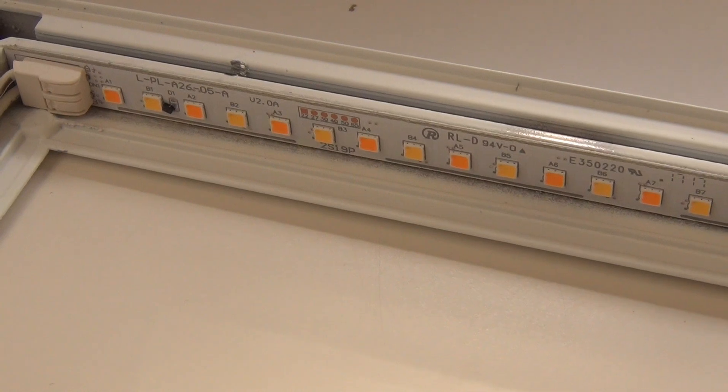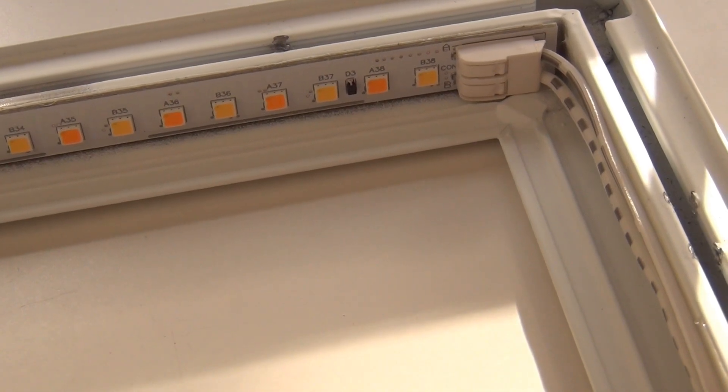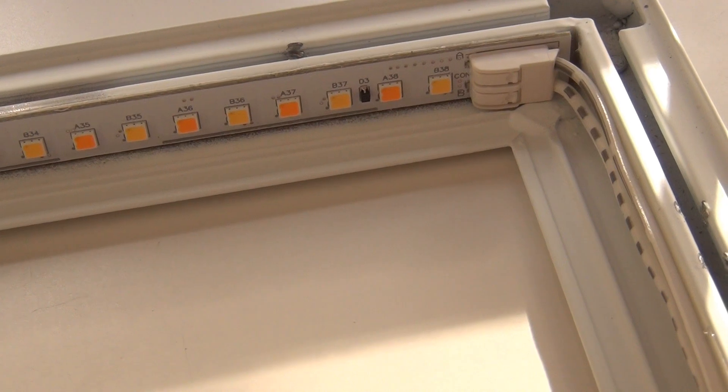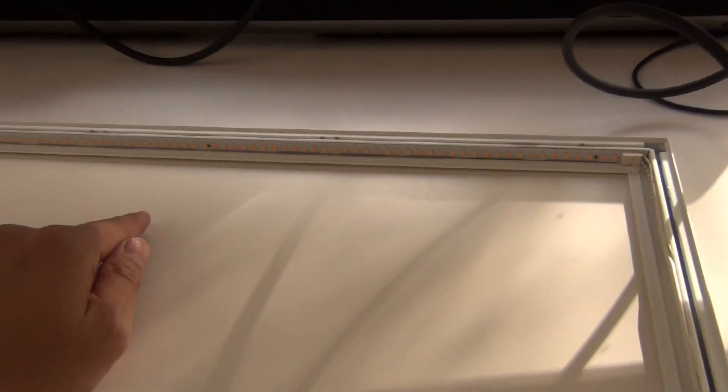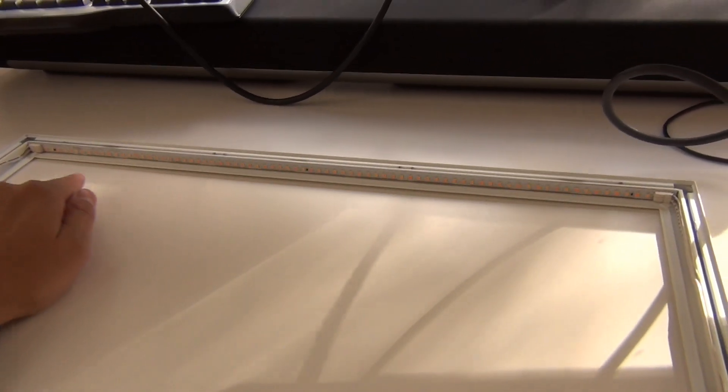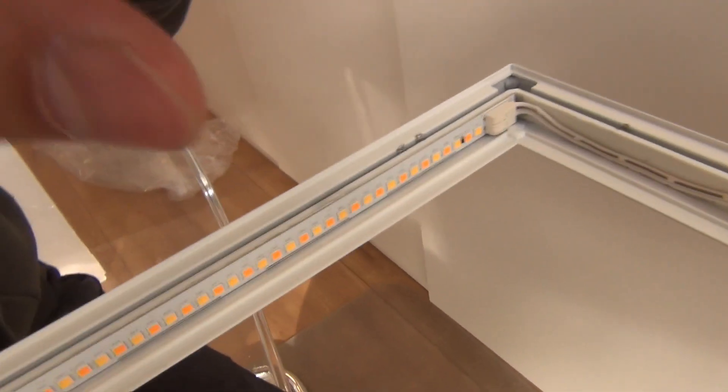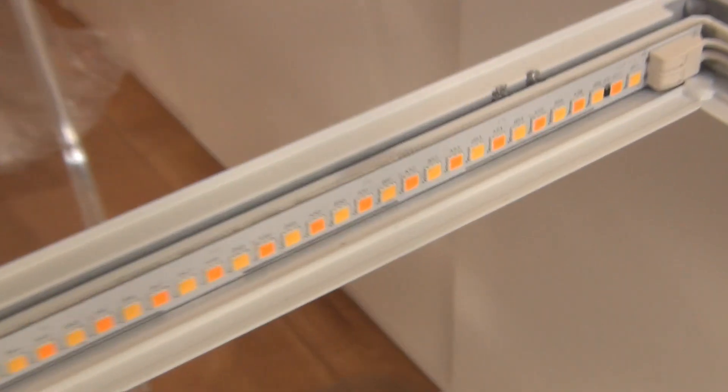But maybe it's also fun to count how many LEDs are actually on this device. So we start from the left. We have A1, B1. And let's go to the right. And then we see A38 and B38. So on one side of the panel there is 76 LEDs on this side. And also on this side the same LED strip. At least I guess and expect that it should be the same.